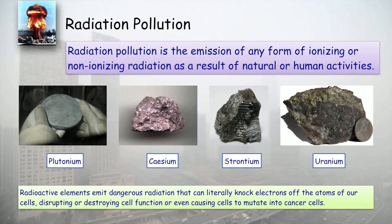Some of the materials that produce radiation are plutonium, cesium, strontium, and uranium — also known as radioactive elements. Radioactive elements emit dangerous radiation that can literally knock electrons off the atoms of our cells, disturbing or destroying cell functions, or even causing cells to mutate into cancer cells.